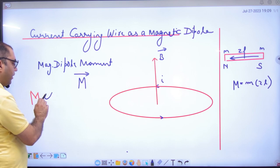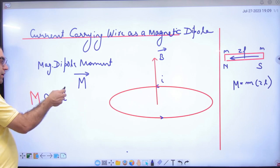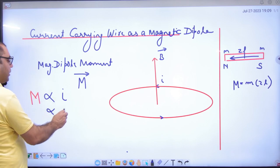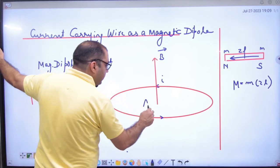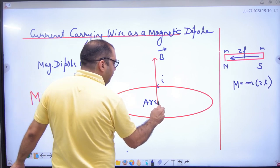We observed that the magnetic dipole moment of the current carrying wire depends on how much current is there and on the area. The area of the loop is Pi R square, which is area A.